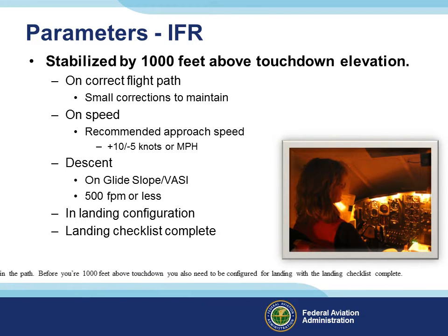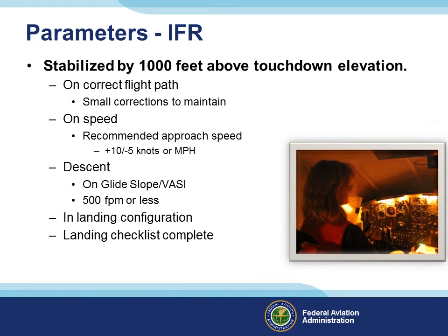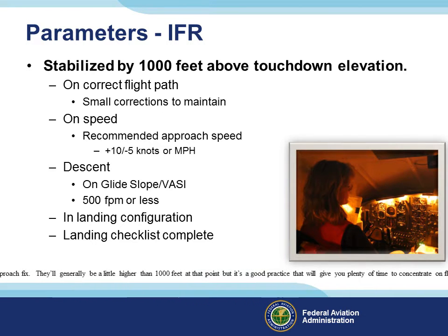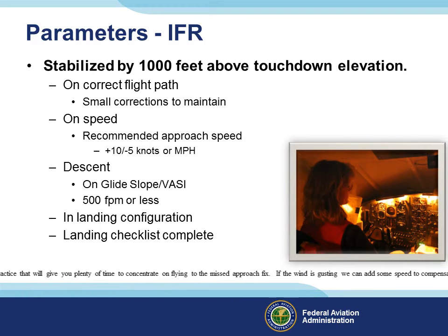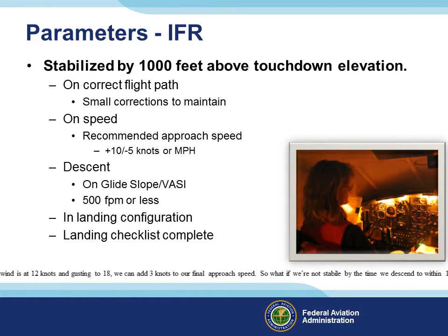Before you're 1,000 feet above touchdown, you also need to be configured for landing with the landing checklist complete. Many instrument pilots want to have all this done by the time they reach the final approach fix — they'll generally be a little higher than 1,000 feet at that point, but it's a good practice that gives you plenty of time to concentrate on flying to the missed approach fix. If the wind is gusting, you can add some speed to compensate, but not more than half the gust factor. For example, if the wind is at 12 knots and gusting to 18, you can add 3 knots to your final approach speed.